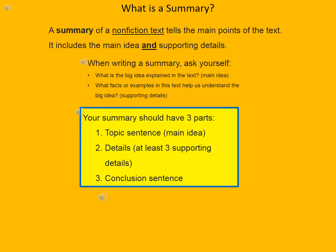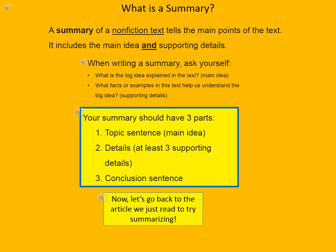Your summary should have three parts. Part one is the topic sentence or the main idea. Part two are the details — you must include at least three supporting details from the article. And part three, you need to have a conclusion sentence restating the main idea. Now let's go back to the article we just read and try summarizing.